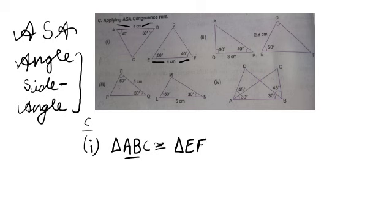Then BC is the next one. Length is not given, but there is an angle of 60 degrees that follows BC, and again 60 degrees on E and D. E has already been done, so D now. Triangle EFD becomes our proper sequence. This is how we write the name of the triangle in the correct sequence.